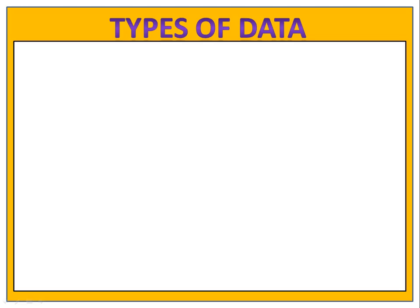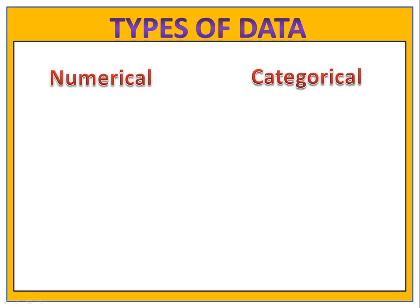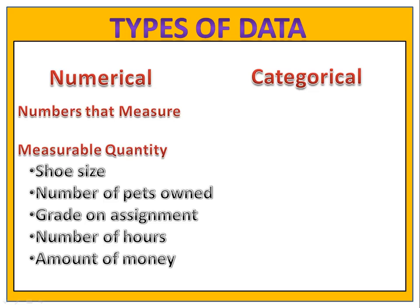We can put data into one of two groups: numerical or categorical. Numerical data typically consists of numbers that measure things. For example, shoe size, number of pets owned, grades received on assignments, number of hours spent studying, or the amount of money in your pocket. All of these can be measured, and so they're numerical data.